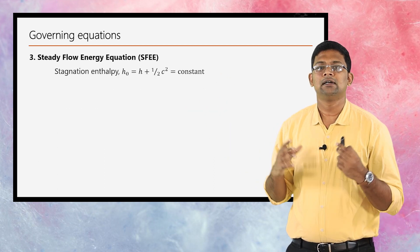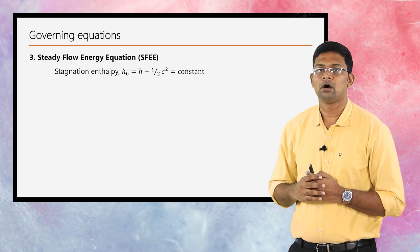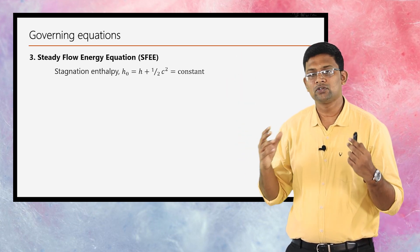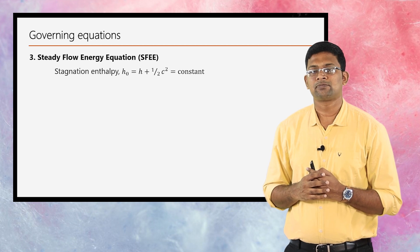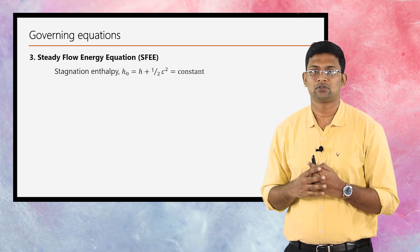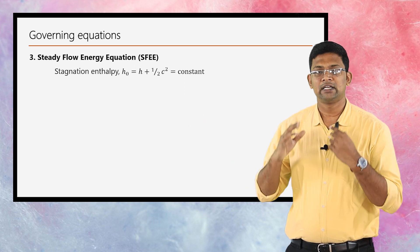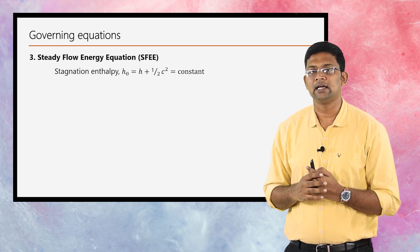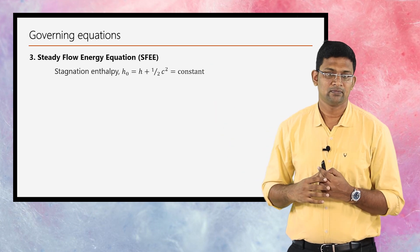The next governing equation is the steady flow energy equation (SFEE). According to the steady flow energy equation, the expression for stagnation enthalpy h₀ = h + ½C² is a constant. So the steady flow energy equation states that stagnation enthalpy h₀ is constant.